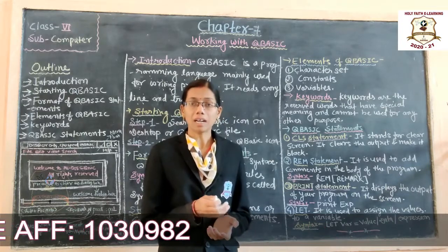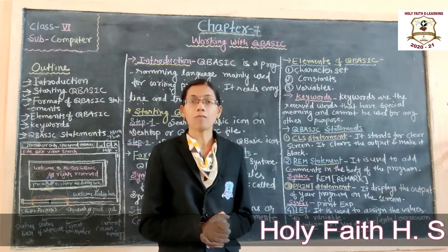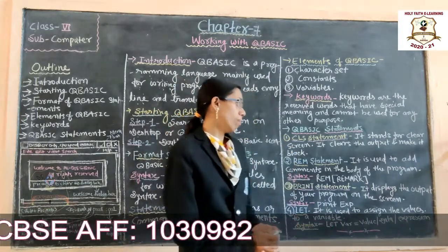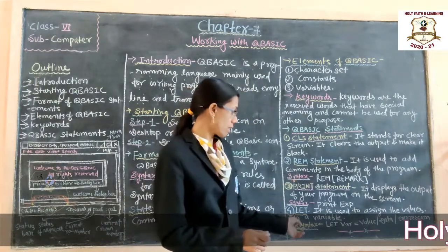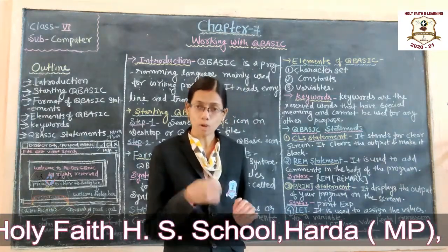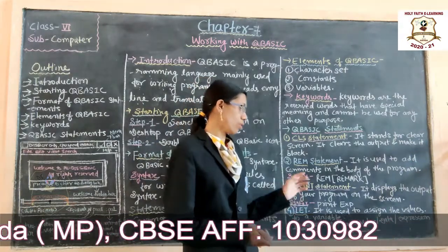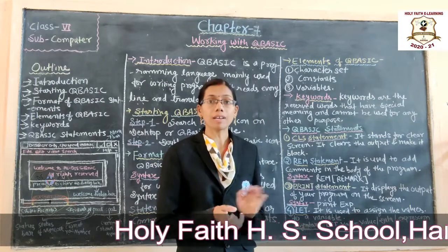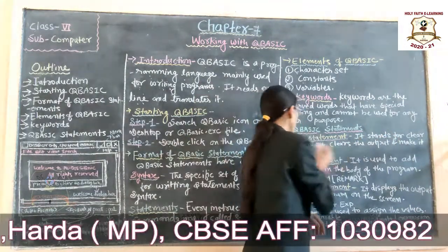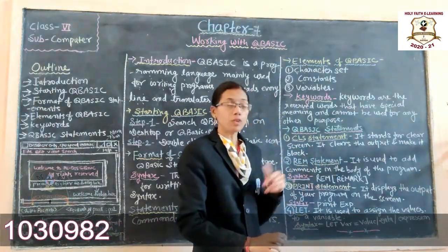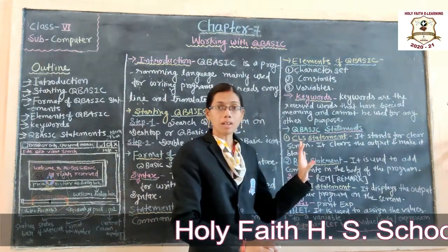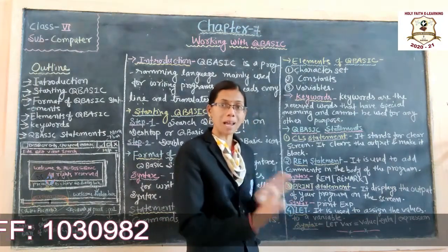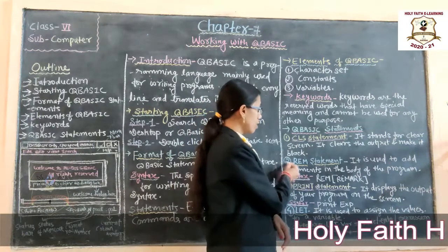Next are Q-Basic statements. There are many Q-Basic statements, but we will discuss four important ones. The first is the CLS statement, which is used to clear the screen — it clears the output on the screen and makes it blank, clearing whatever you have written.